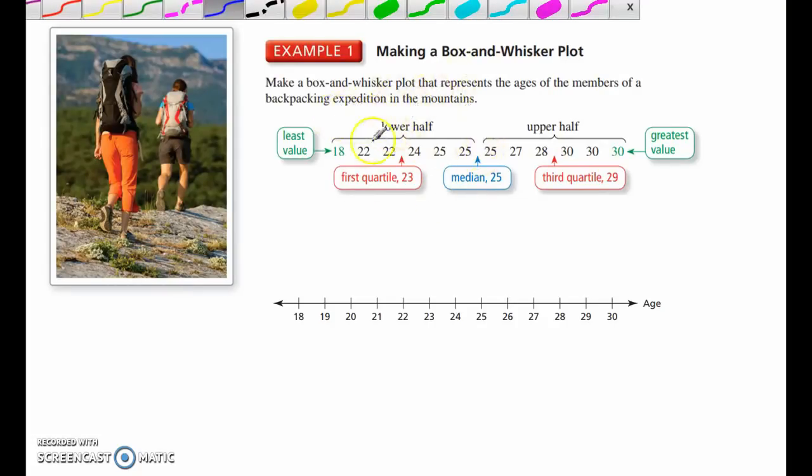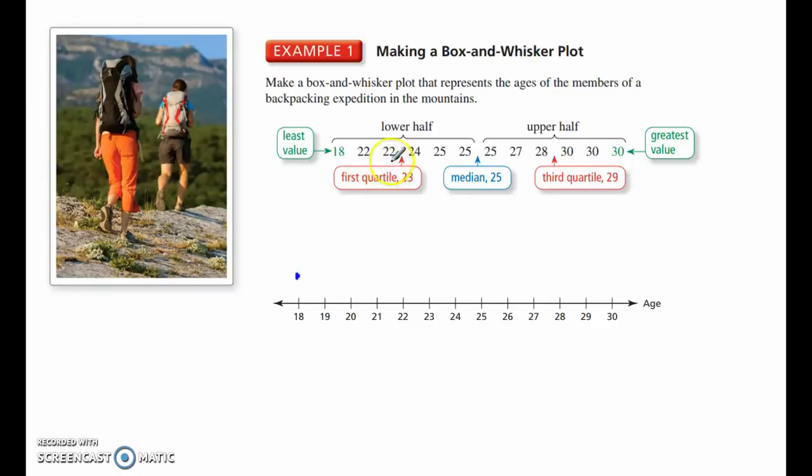Now, in order to make a box and whisker plot, I have my five values. I'm going to put these on a number line. My number line doesn't have to start at 1, it can start at whatever my least value is. So, I'm going to put a dot right there, then where my first quartile is at 23, I'll put one there. The median is at 25, and then the third quartile, 29, and my greatest value at 30. Once I have those, I put a box around the quartiles, and then extend whiskers to the greatest and least. And there's my box and whisker plot.